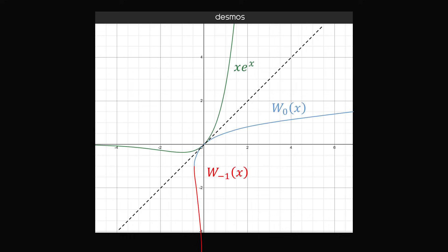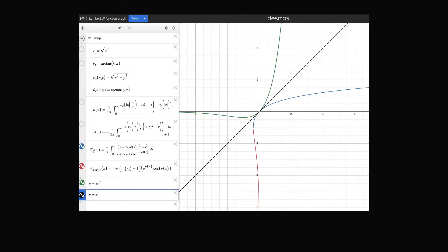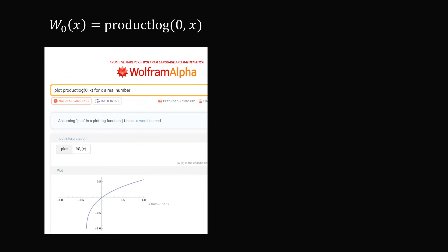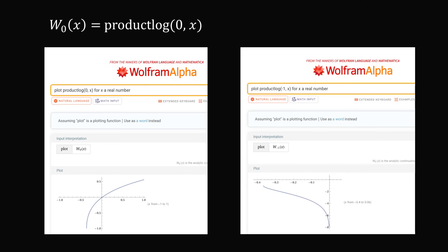You might wonder if you can graph these functions yourself. From a practical perspective, you have to estimate these graphs numerically. Someone has put together a complicated setup in Desmos — I've provided a link in the video description, though there is some trouble with the minus-1 branch near negative 1. But you don't have to worry because the Lambert W function is built into Wolfram Alpha. To evaluate the principal branch W₀(x), use the syntax ProductLog[x]. To evaluate the minus-1 branch W₋₁(x), use the syntax ProductLog[-1, x].